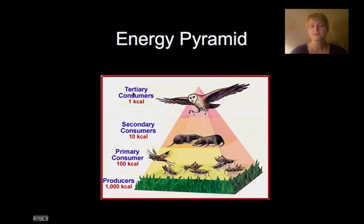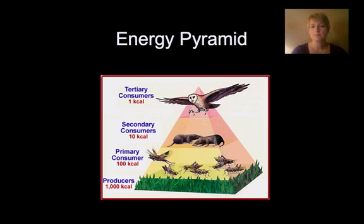We also have an energy pyramid, which is really looking at those trophic levels. An interesting thing about the energy pyramid is that each level loses about 10 percent of the energy as it moves up. So if something is eating the producers — the ones on the lowest energy level, the grasses or other plants —